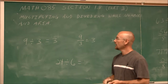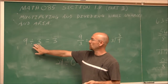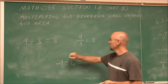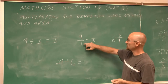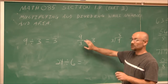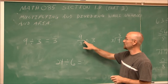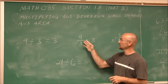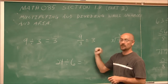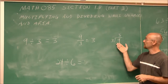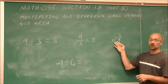We might see division in several forms. We might see this symbol, which indicates division. We might see something in a ratio or fraction form — don't fret about fractions, they just mean division. A fraction is nothing more than saying this number divided by this number. And then we see this form of division, which is our division bar here.